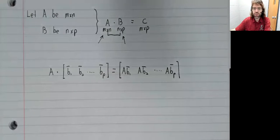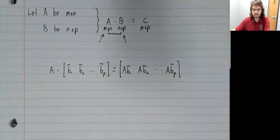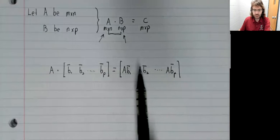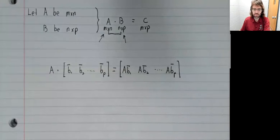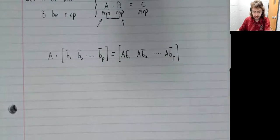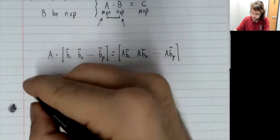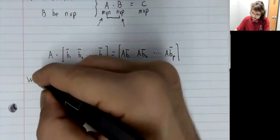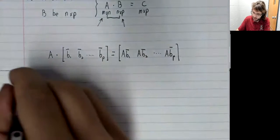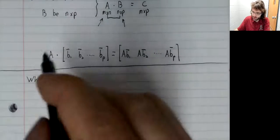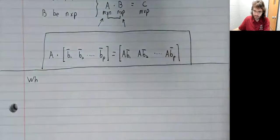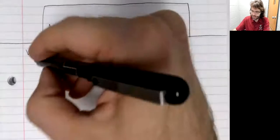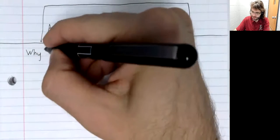Because we already defined matrix vector multiplication, we can find all of these products. So there's our definition.